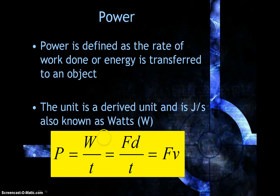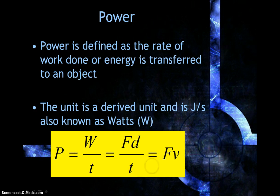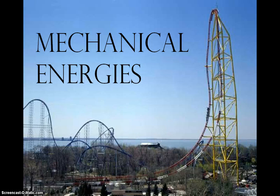We already know that work was force times distance, so you could also have force times distance over time. But distance over time is velocity, so you could also see power as force times velocity. So, there are all these different ways in which we can calculate power, or the rate at which work is done on an object.